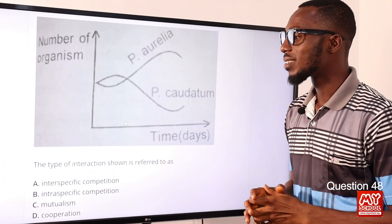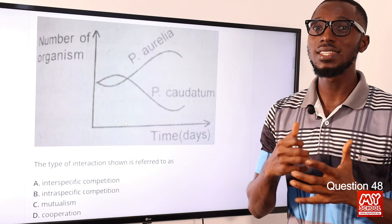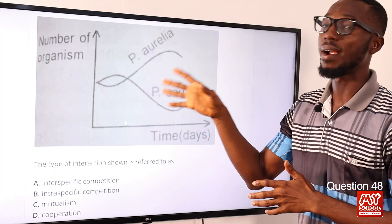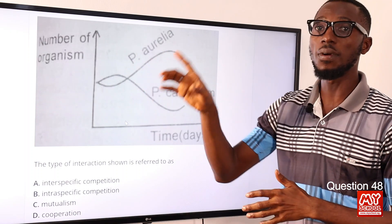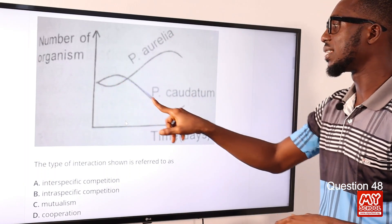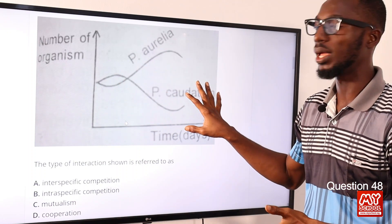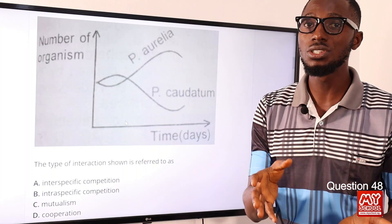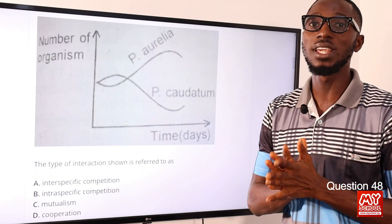Question 48. The type of interaction shown is referred to as interspecific competition. We are looking at two species of Paramecium: Paramecium aurelia and Paramecium caudatum. From the graph, there was an initial growth by caudatum which then declined, showing that aurelia outcompetes caudatum. They are the same genus but different species. So the correct option is option A for interspecific competition.